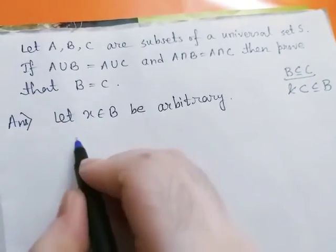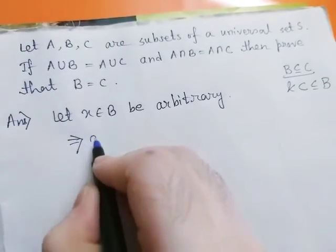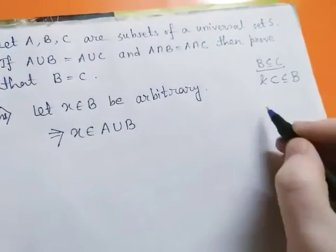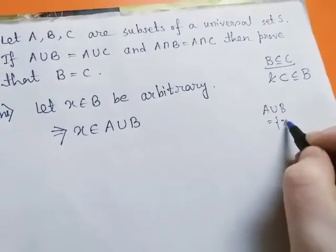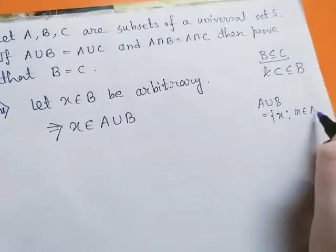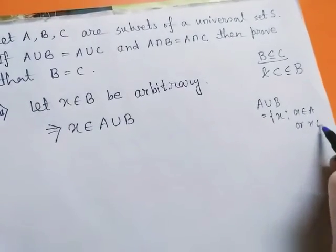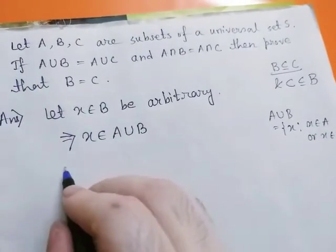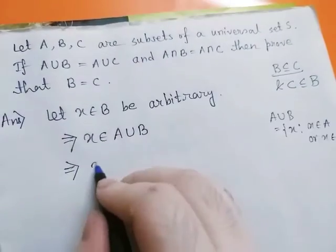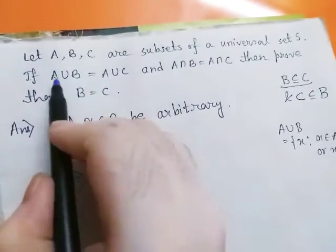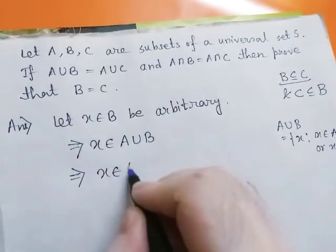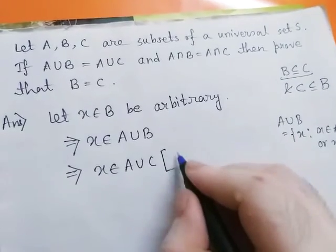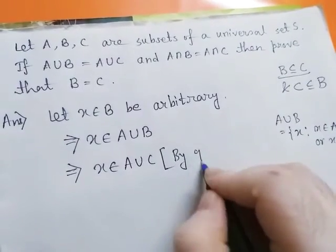This implies x belongs to A union B, because A union B means x belongs to A or x belongs to B, and since x belongs to B, obviously x belongs to A union B. Now this implies x belongs to A union C, by the given condition A union B equals A union C.